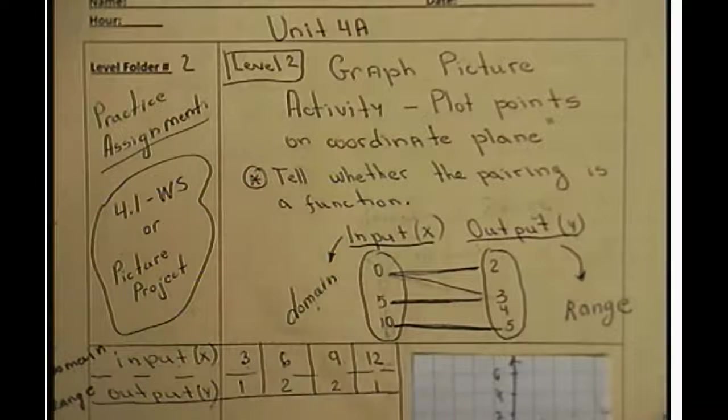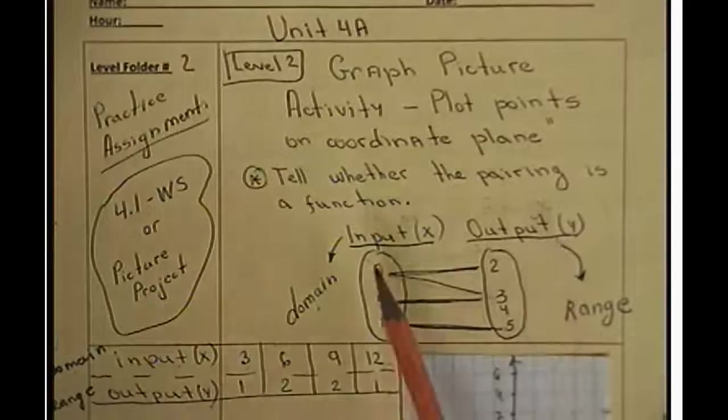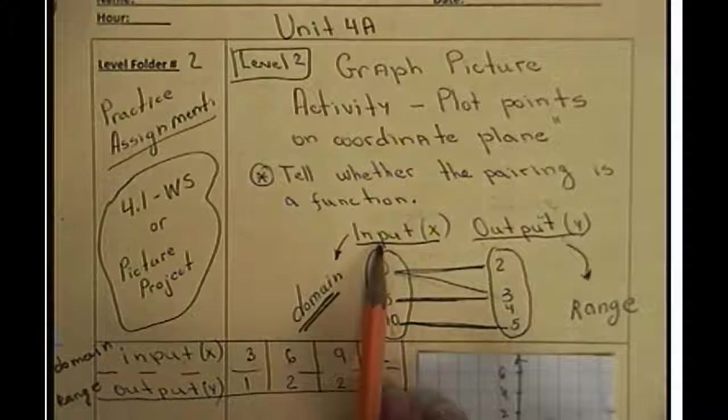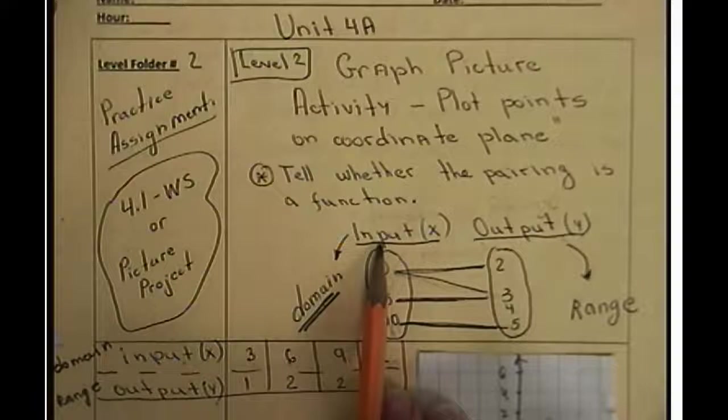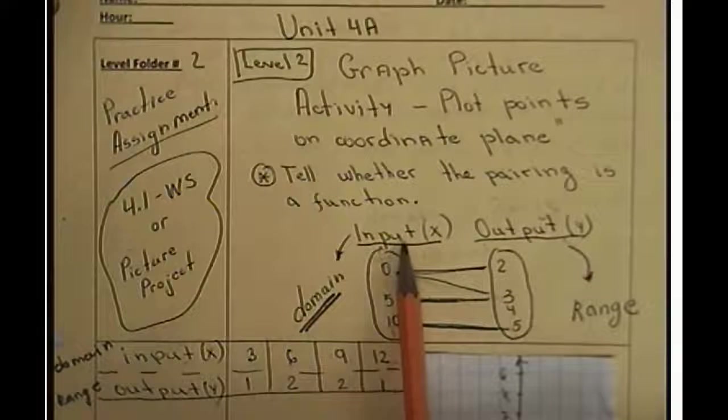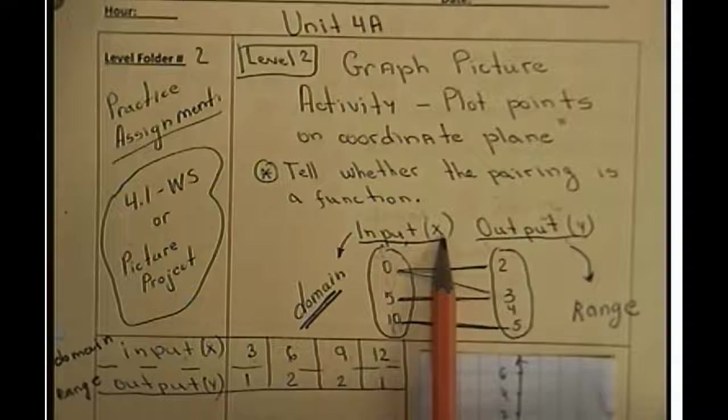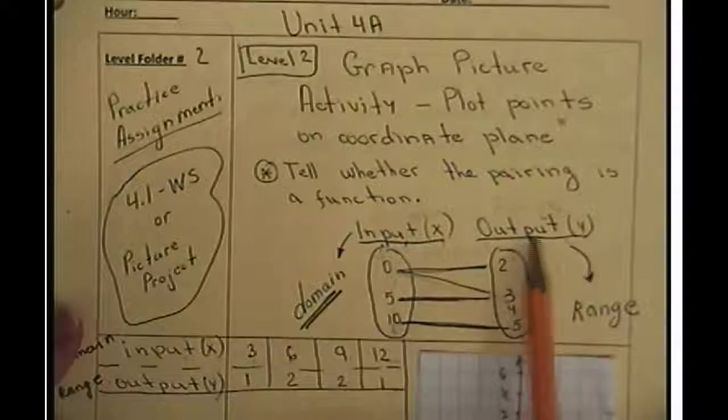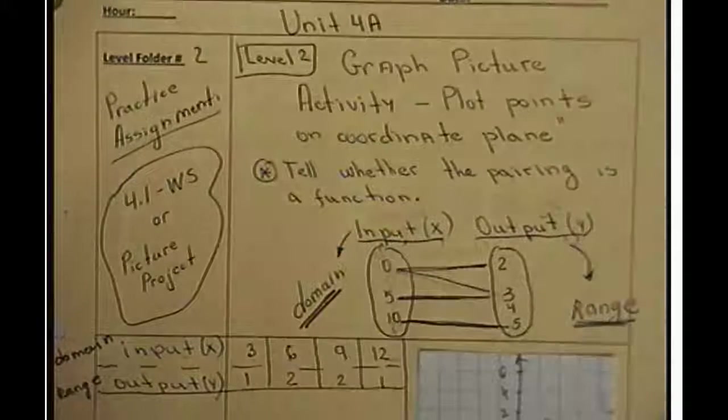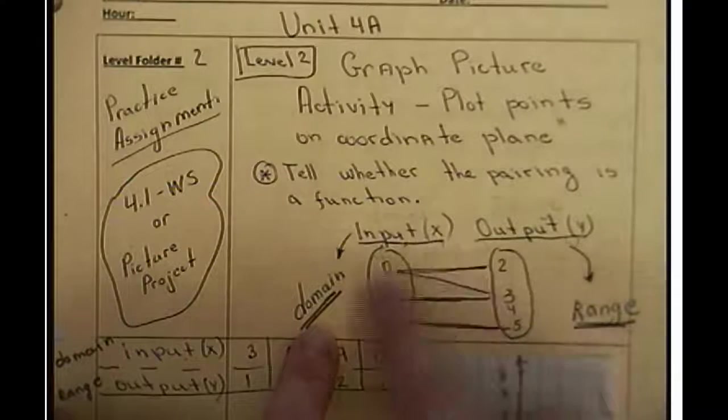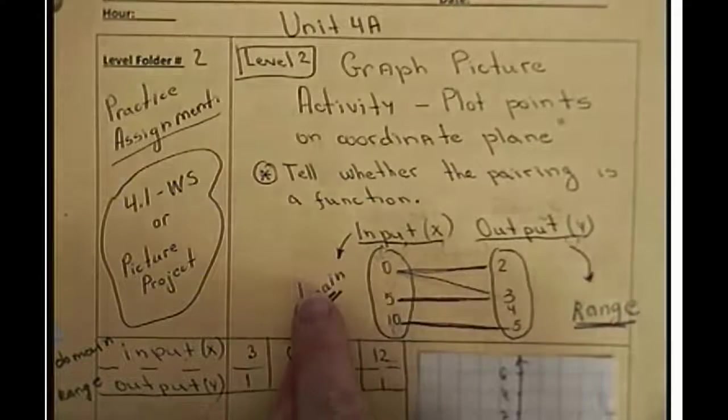So when we talk about functions, again we have the coordinate pair that has x and y coordinates. x coordinate is called domain, we already talked about this, but also we call it input. So there's just another term to remember. Domain and input is the same exact thing that represents variable x on the table or on the coordinate ordered pair. And output is the y coordinate that also is called range. So you are familiar with both of those domain and range already. x is domain, y is range, but also x is called input, y is called output.